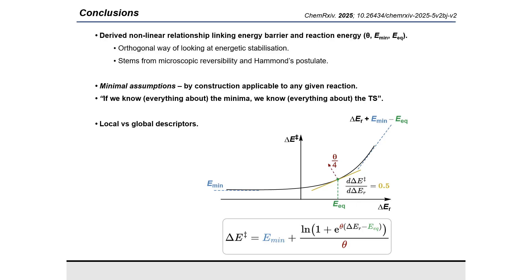It reframes the linear approximation, as seen in the Leffler equation, as a local descriptor, some sort of tangent to this nonlinear function. And so E_min, E_EQ, and theta would cause there to be different gradients at different points, being the global descriptors, whereas the local tangent would be a local approximation.